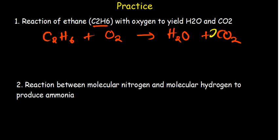Observe the atoms. Carbon: we have two on the left and one on the right, so put a 2 in front of CO₂ — carbon is now balanced. Hydrogen: we have six on the left and two per water molecule, so put a 3 in front of H₂O — hydrogen is now balanced. Notice we did not start with oxygen, because oxygen appears in more than one compound; always start with elements present in only one compound — here, carbon in CO₂ and hydrogen in H₂O.